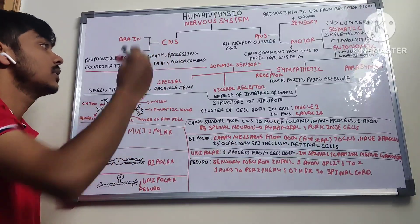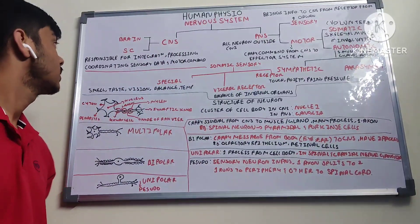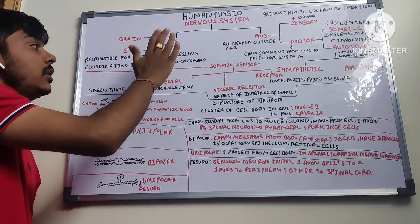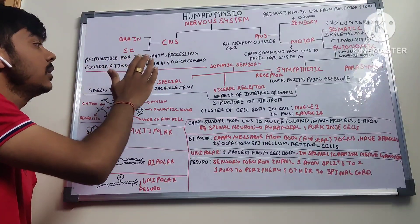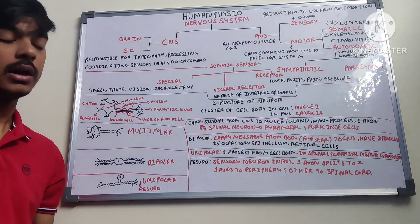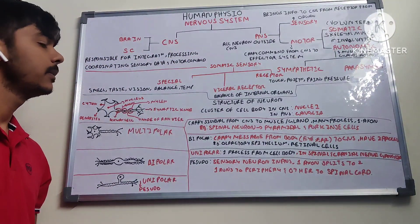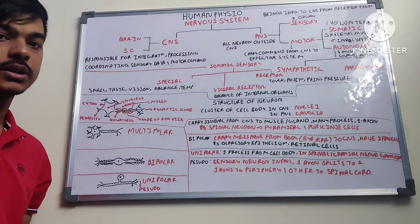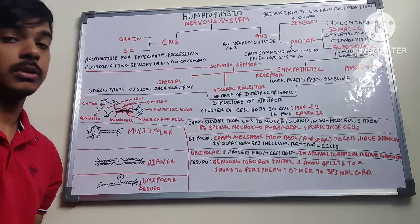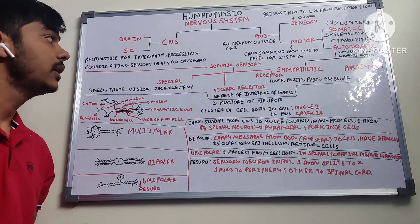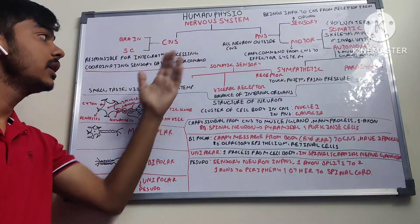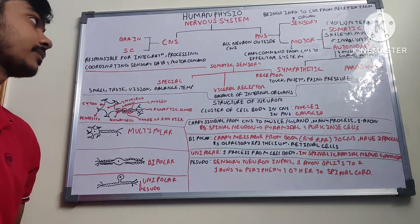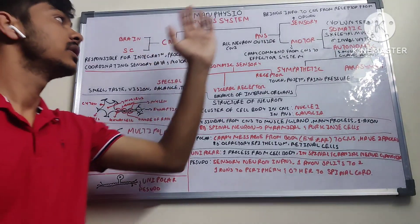What does the central nervous system do? It is responsible for integration, processing, and coordinating sensory data and motor commands. The brain and the spinal cord are basically responsible for interpreting the sensory response which comes from our various effector organs, and in return they give out a motor command so that the action can take place.